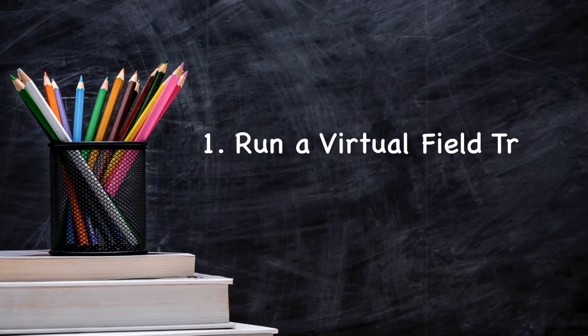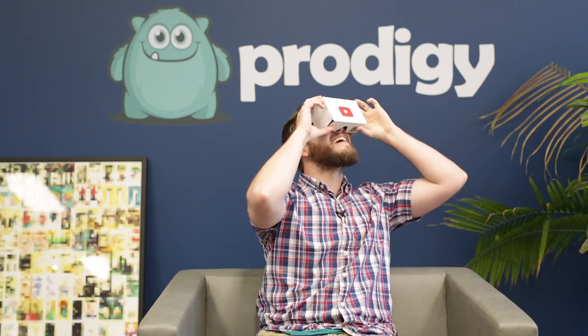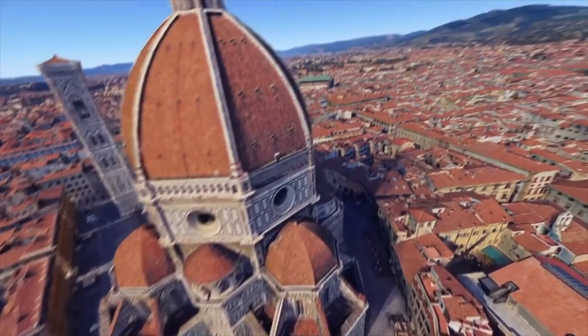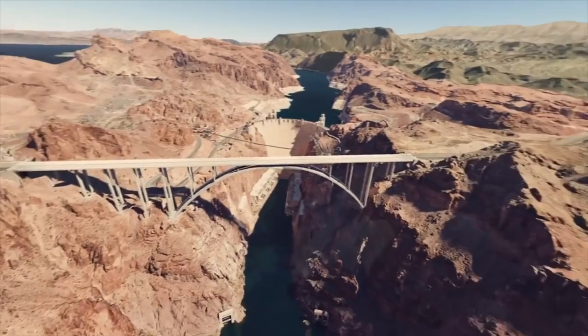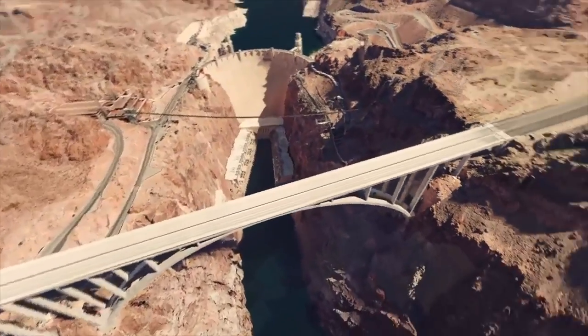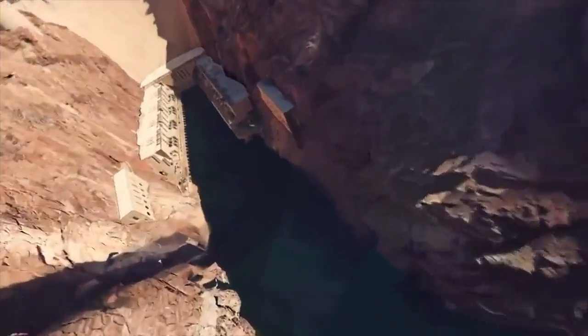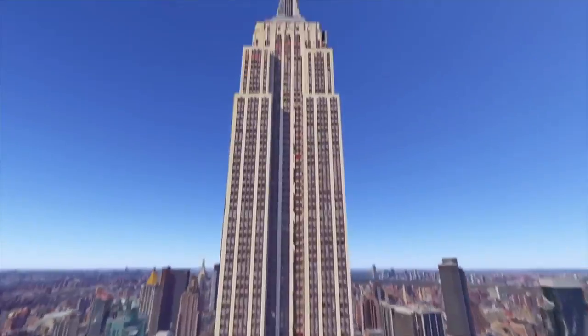Number one: run a virtual field trip. If a location is out of reach, you can simulate a virtual field trip using Google Cardboard. There are apps you can use to explore famous buildings, such as the Empire State Building, and natural phenomena, such as the Great Barrier Reef. This is a great way to study new areas from a geographic perspective or to hold mock conversations in new languages.